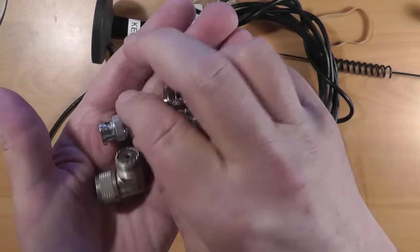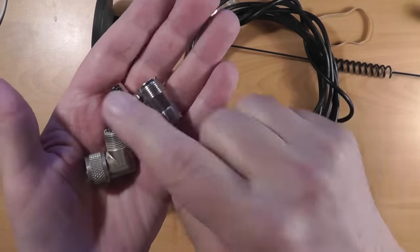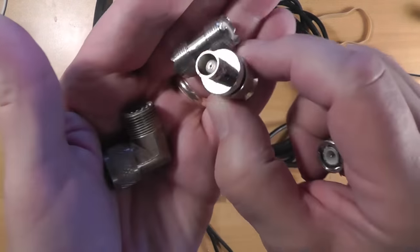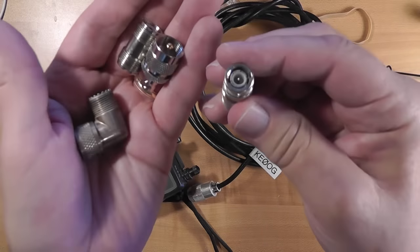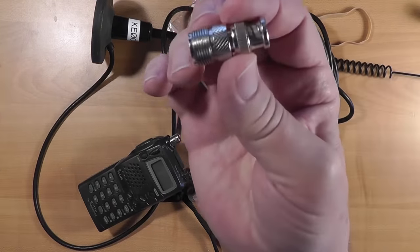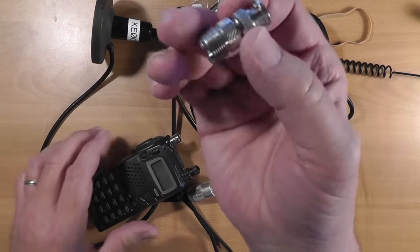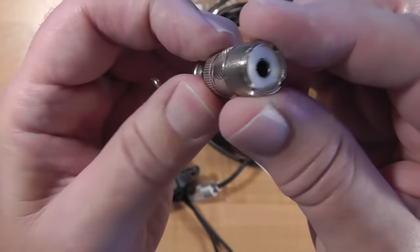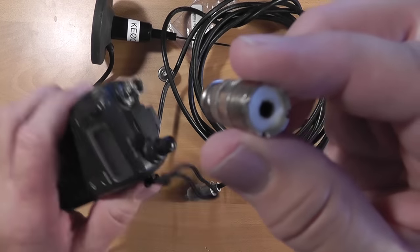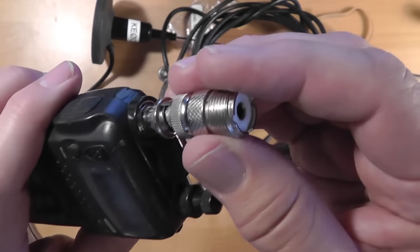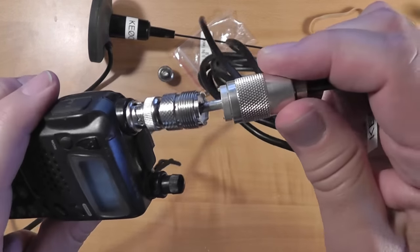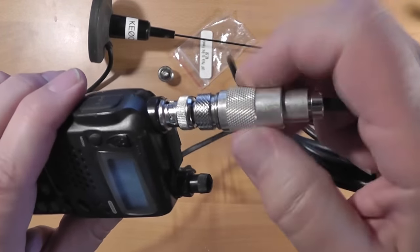For any gender of any connector, there are adapters to connect between them. You can get these easily, and they usually cost only a few dollars. This particular adapter is ubiquitous. On this end is a male BNC to connect to the handheld. On this end is a female connector, the equivalent of an SO239. This allows you to connect a PL259 antenna cable to a BNC connector on the radio.